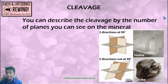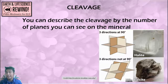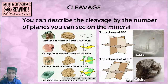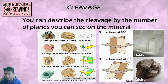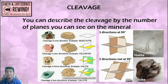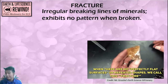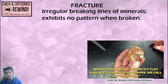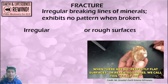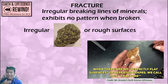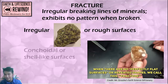Cleavage describes the tendency of minerals to break in certain planes. You can see that halite and calcite have varying cleavage planes — they have shapes when they break. Cleavage can be in one direction only, two directions, or three varying angles. Fracture is the absence of cleavage, meaning there are irregular breaking lines with no pattern when the mineral is broken. Fractures can be completely irregular with no pattern at all.